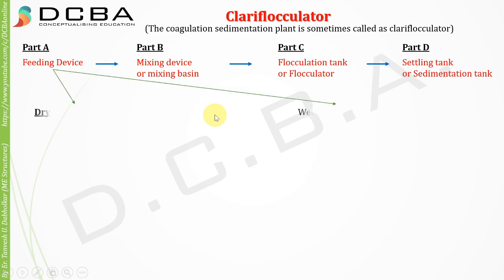Part A is the feeding device — basically the feeding of coagulant. Sedimentation aided with coagulant means we are adding coagulant to the water so that particles get flocculated, their size increases, and settlement is helped. There is dry feeding and wet feeding.